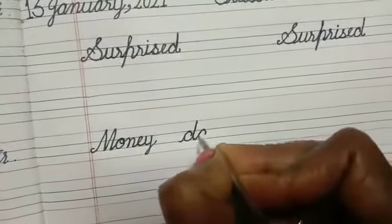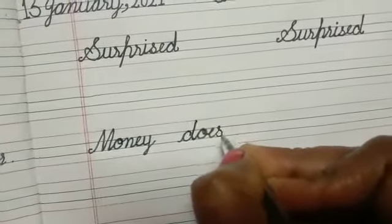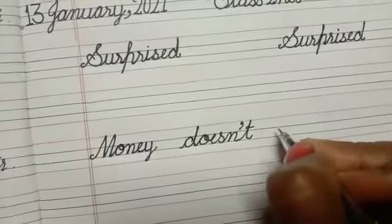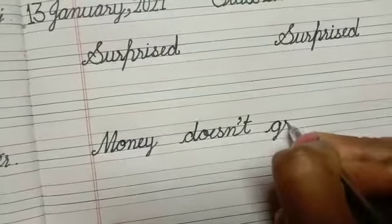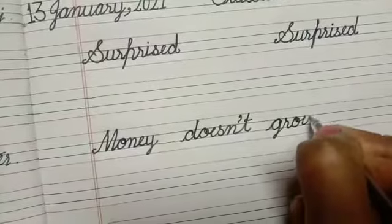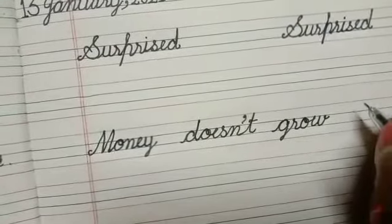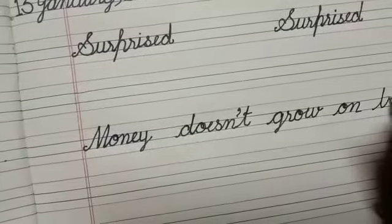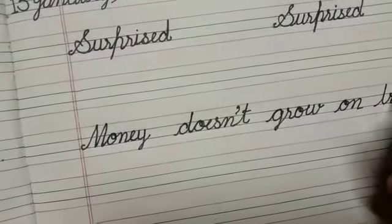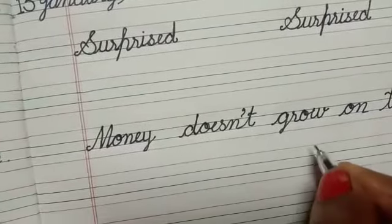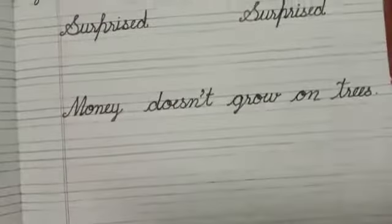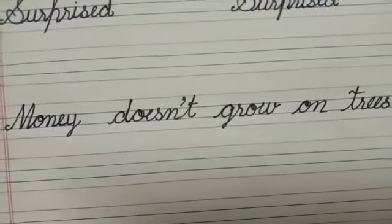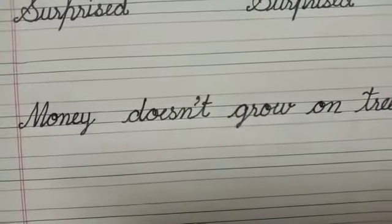Doesn't grow on trees. 'Money doesn't grow on trees.' Paisa paid per nahi ugta — paisa paid per nahi ugta. Money doesn't grow on trees.